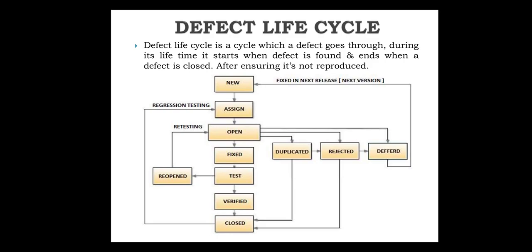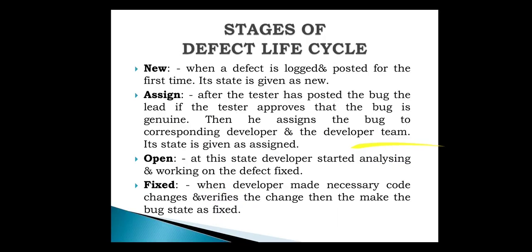This is all about the defect life cycle. We will now see these stages in detail. The first stage is 'new': when a defect is logged and posted for the first time, it is in the new state. Next is 'assigned': after the tester posts the bug and the lead approves it as genuine, the bug is assigned to the corresponding developer team.